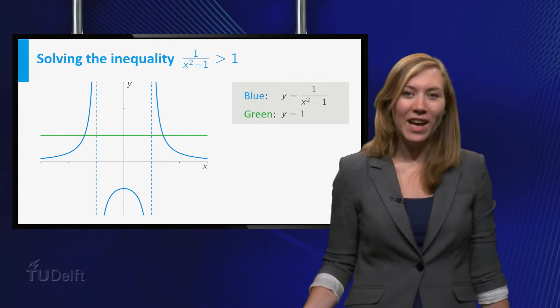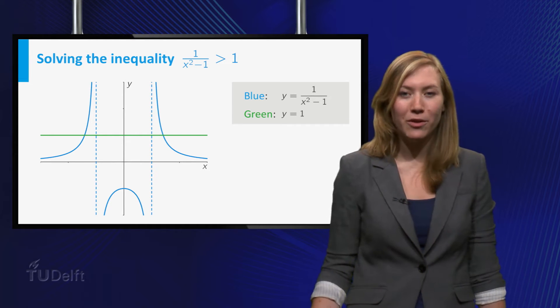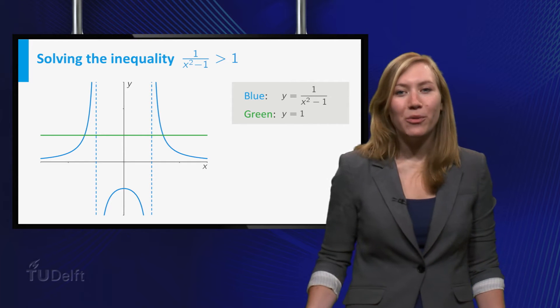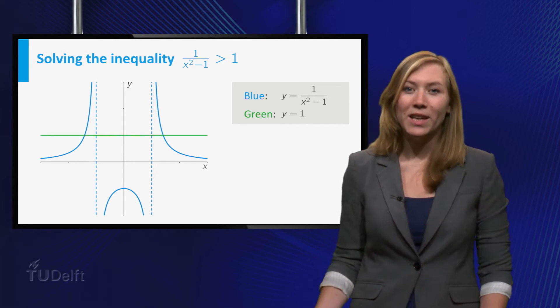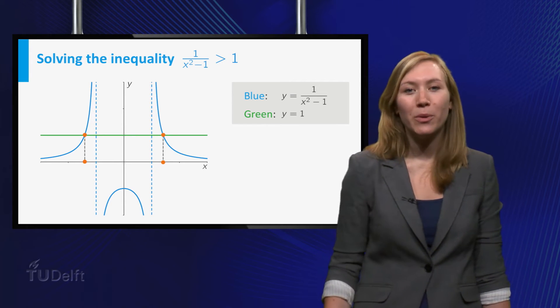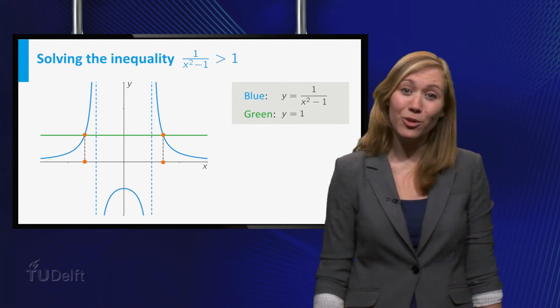The solutions to this inequality lie in the intervals where the blue graph is above the green one. Remember, the boundaries of these intervals can be points where both sides are equal, that is where the graphs intersect, but also at points where one of the functions is not defined or discontinuous.